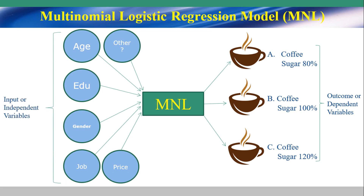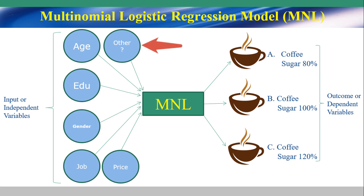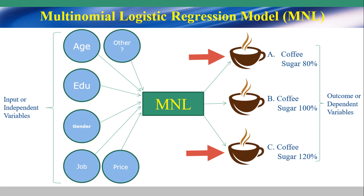On the left-hand side is the independent variable, or input, which includes variables such as age, education, gender, job, price, and other variables. For example, explaining the age variable: an older person may choose coffee with low sugar, such as group A with 80% sugar, because older persons may not like sweetness. But a younger person may like sweetness, so group C — coffee with 120% sugar — is chosen by younger persons. So the age variable may affect the outcome.